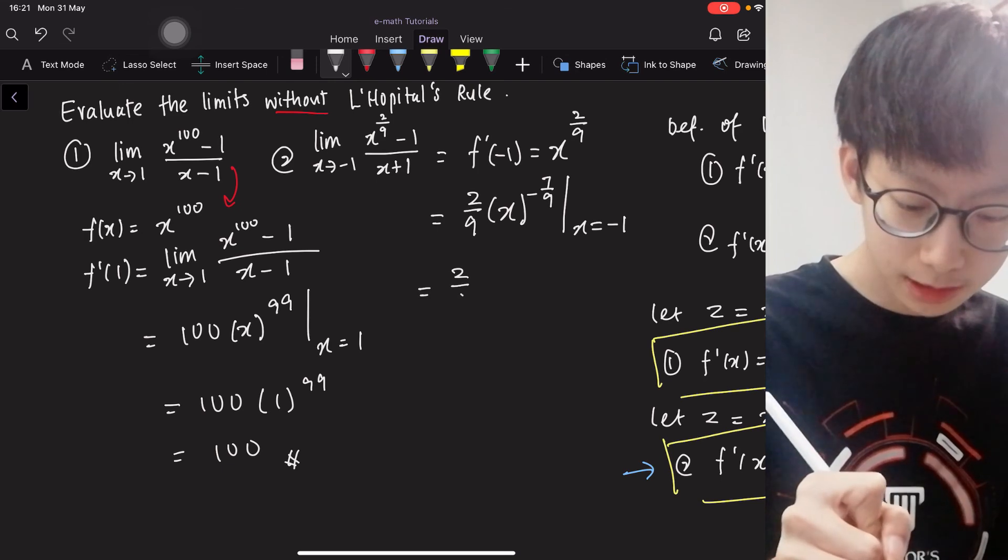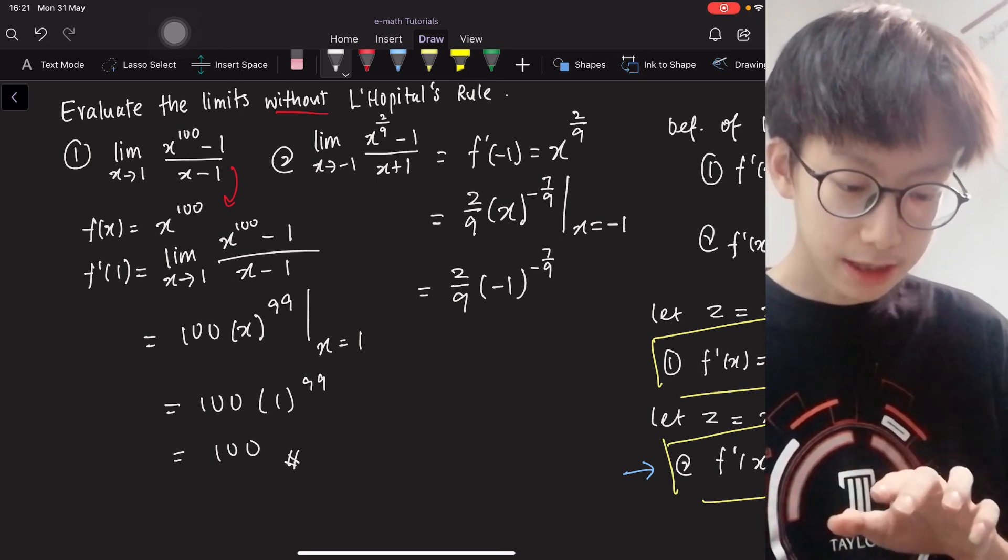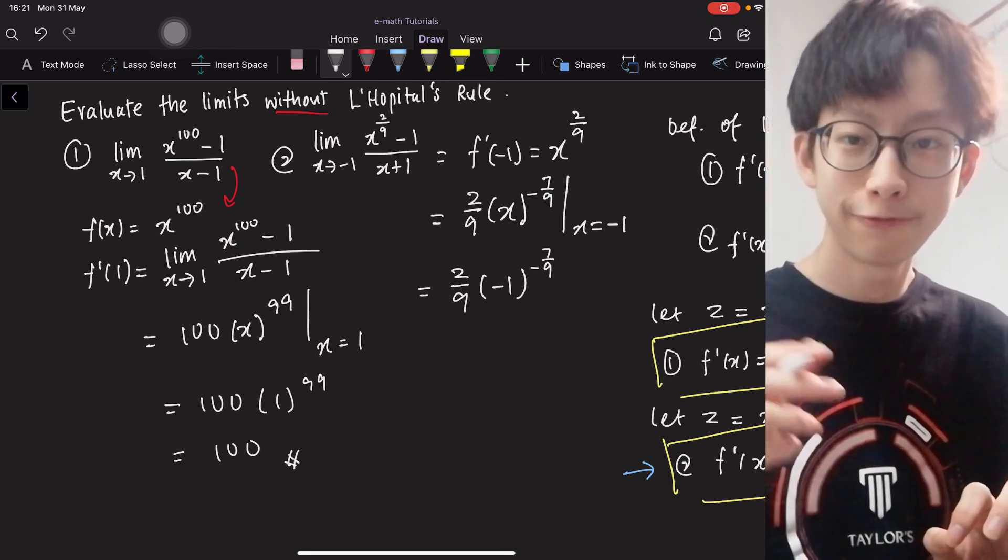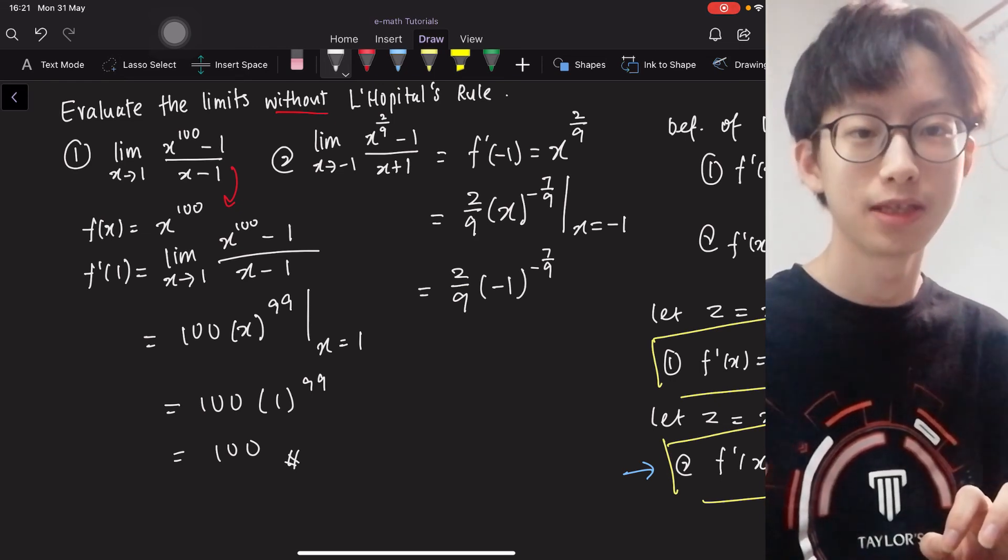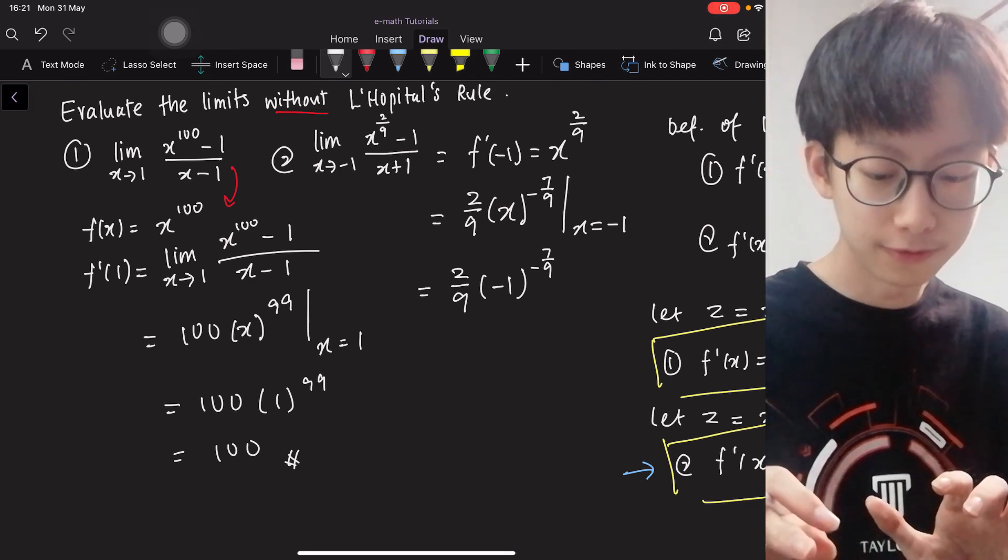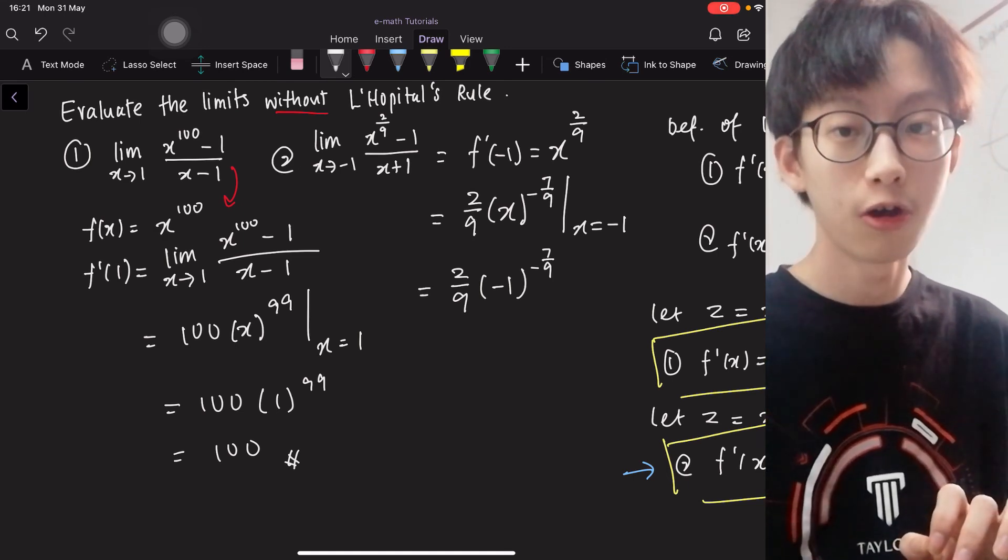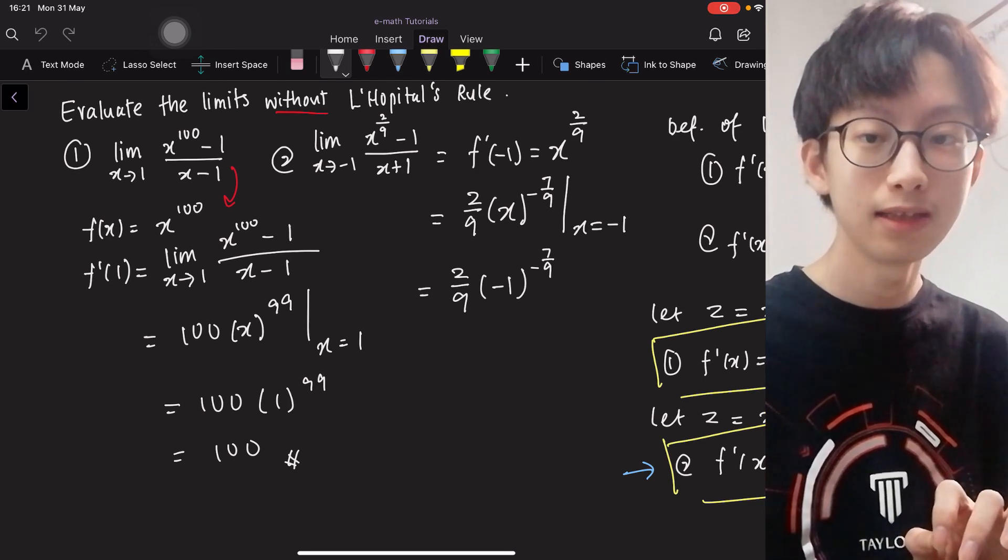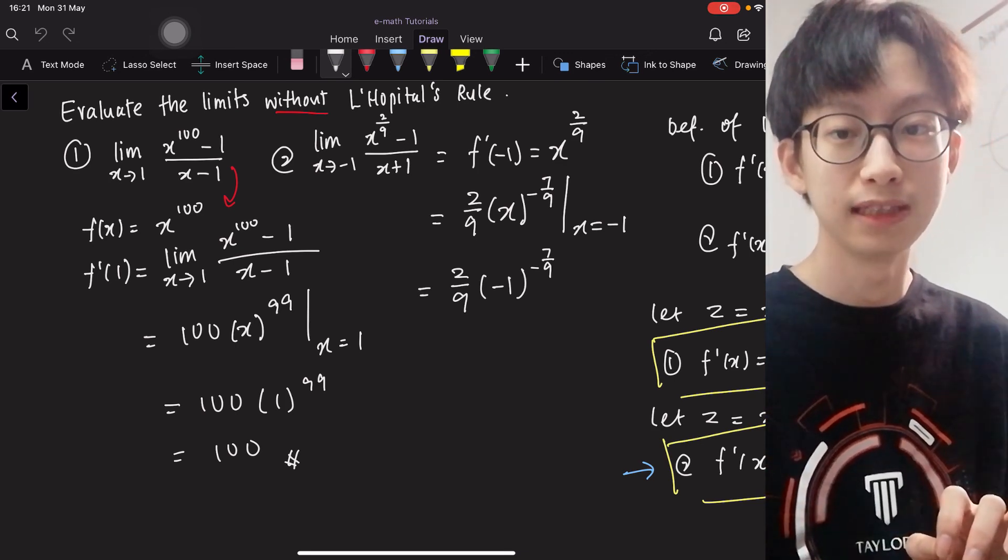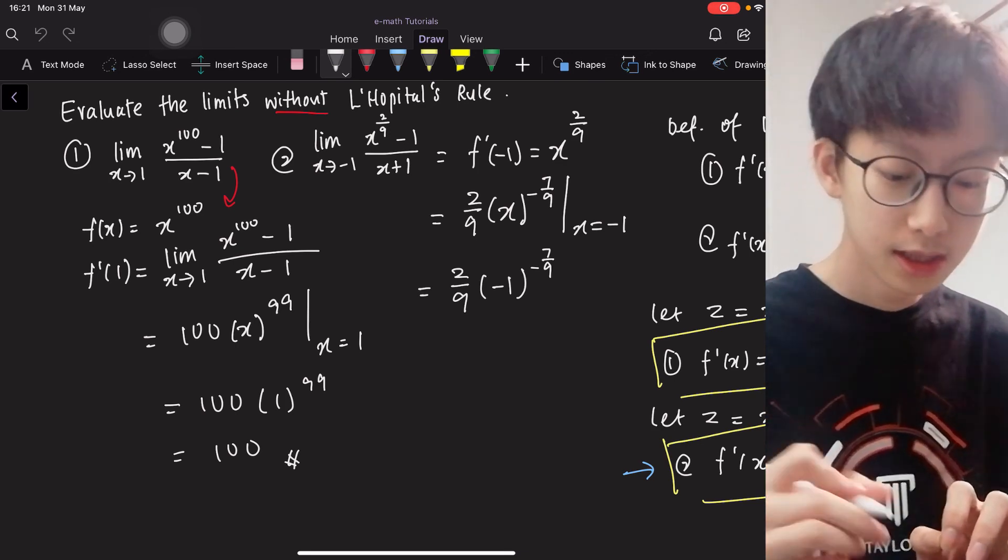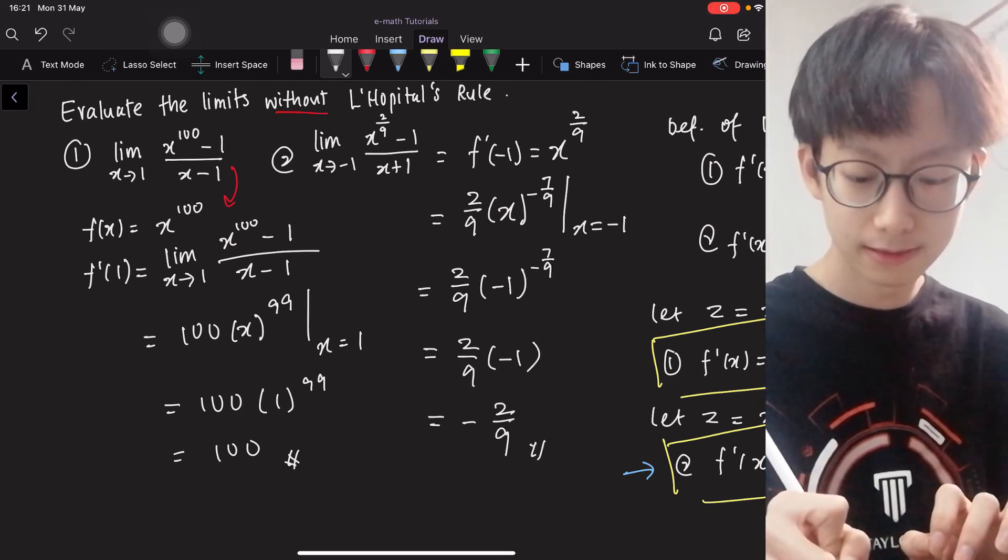and we evaluate it at x equals to negative 1. So you have to be a little bit careful when you are doing this, because when you are raising negative 1 to negative power, it doesn't matter if it is a negative power because it is just a reciprocal. The problem is with the numerator of that fraction, which is 7. It is an odd number, which means negative 1 is still negative 1. It will not become positive unless it is raised to an even numerator or even power. Hence, it is 2/9 times negative 1, which gives you negative 2/9. And this is it.